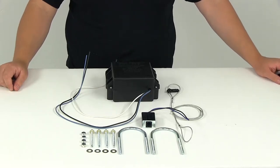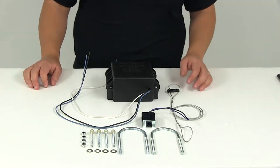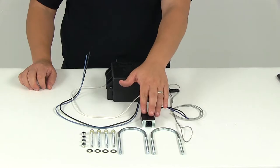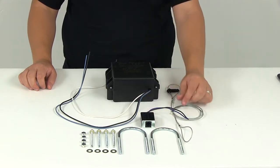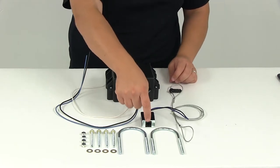Today we'll be reviewing part number HM20001, the Hopkins trailer breakaway kit with a charger. You're going to get the breakaway box which is a switch, the cable with the plug that connects to the back side of the switch.